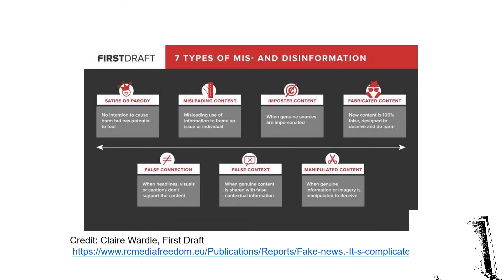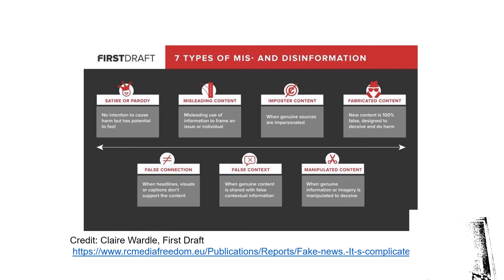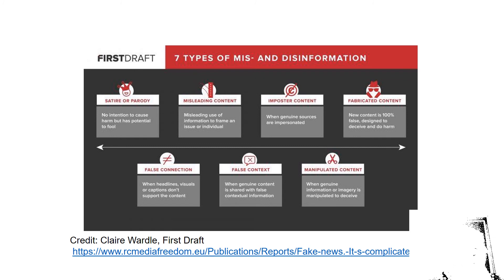There is another technique: false context. That is, when genuine content is shared with false contextual information. Many times we find stories circulating on social media, and then we realize the story was based on an incident that happened years before or in a different place. Many times we see pictures — for example, during a storm — that are actually not true because they are pictures of a different place, not pictures of Cairo drowning in water.